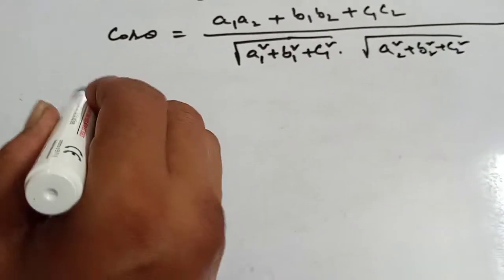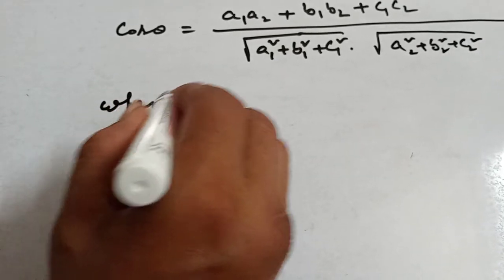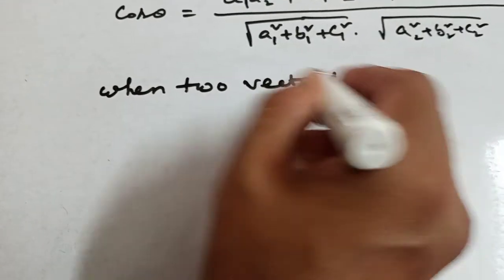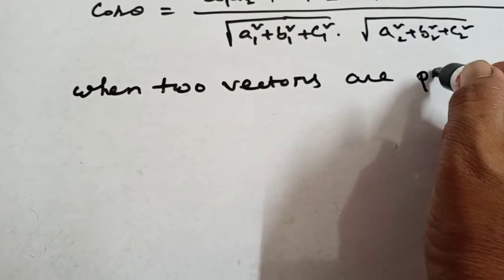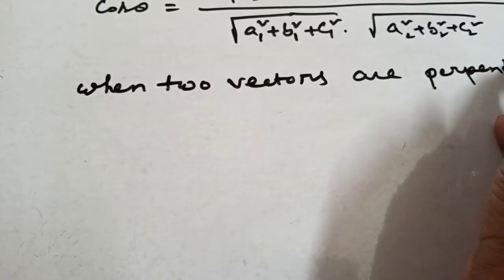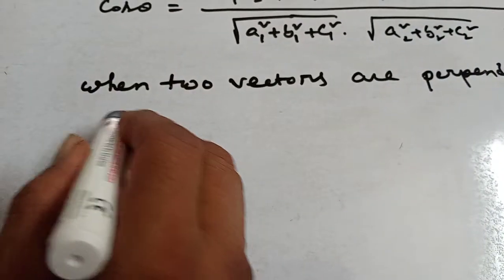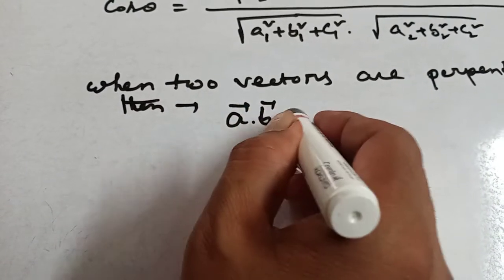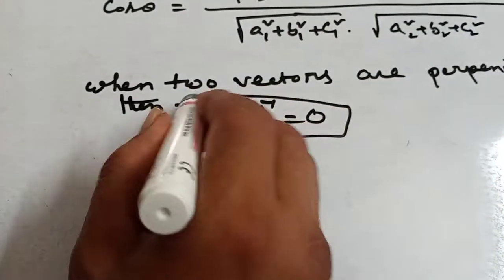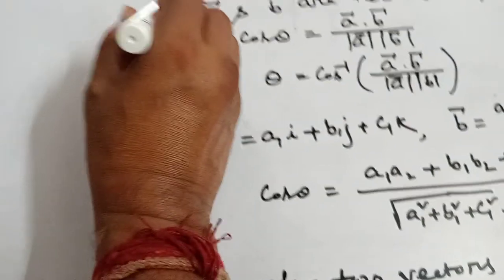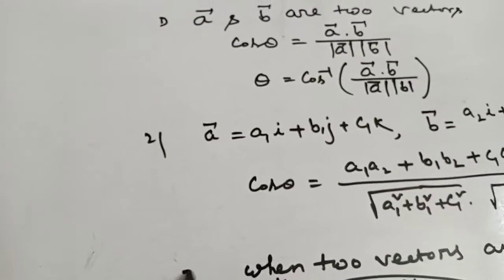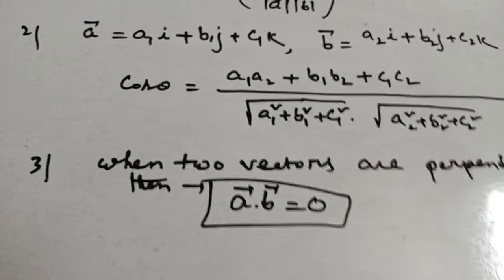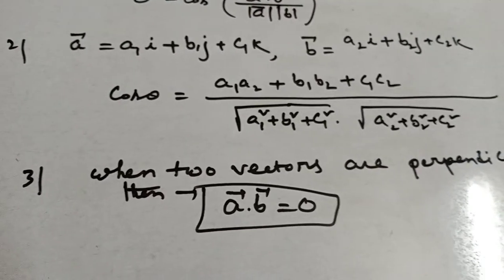Next, when two vectors are perpendicular to each other, then a vector dot b vector equals 0. This is formula 1, formula 2, and formula 3. When two vectors are perpendicular to each other, then a vector dot b vector equals 0.